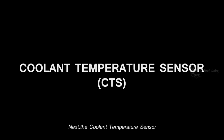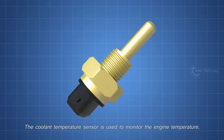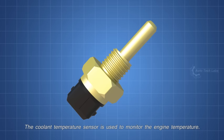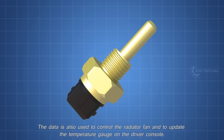Next, the coolant temperature sensor. The coolant temperature sensor is used to monitor the engine temperature. The ECU will use this data to manage fuel injection and ignition time. Some engines have more than one coolant temperature sensor.